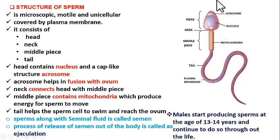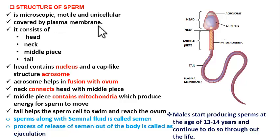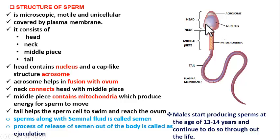Sperm is unicellular — it is made up of one cell. This whole structure is made up of one cell. Sperm is also covered by a plasma membrane. You all know animal cells are covered with plasma membrane, and sperm is also an animal cell — a human cell. So this whole structure is covered with plasma membrane. Now, it has four important parts: head, neck, middle piece, and tail.